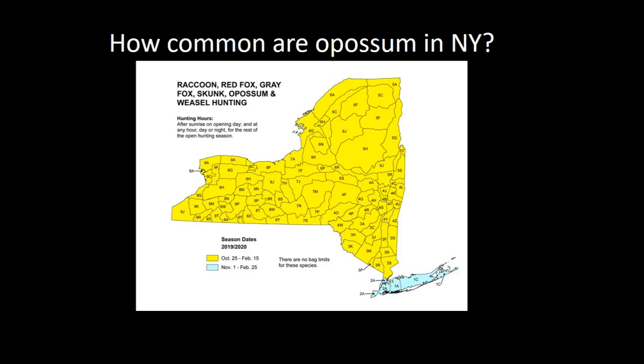Possums are incredibly common in New York State now. This is from the hunting syllabus the New York State DEC puts out every year — it shows that possums, along with fox, raccoon, and weasels, have a hunting season from October 25th to February 15th. That's a long time, and they have no bag limits — you could shoot as many possums as you wanted, day or night, every single day of the season. This generous season with no bag limit tells me that New York State is not worried about losing its possums — so that means we've got lots of them.